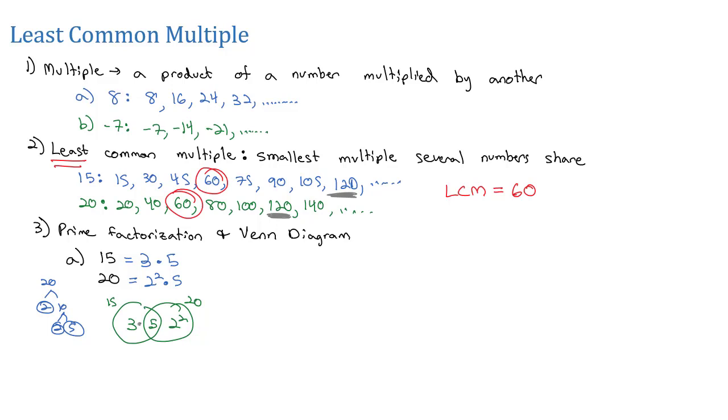If I were to multiply all of these together, 3 times 5 times 2 squared, that will give me the least common multiple of 15 and 20. Well, 2 squared is 4, so 3 times 5 times 4 is 15 times 4, which is 60. We've got our least common multiple that we found from the list.